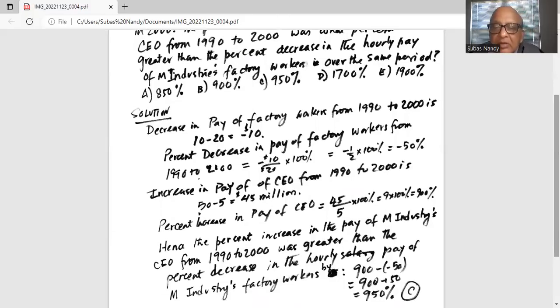Hence, the percent increase in the pay of M Industry's CEO from 1990 to 2000 was greater than the percent decrease in the hourly pay of M Industry's factory workers by 900 minus minus 50. Don't forget that minus 50 because there was a decrease in pay of the hourly workers.